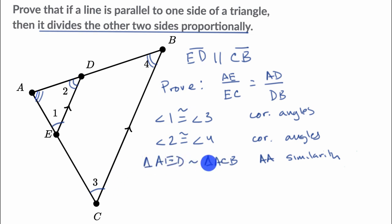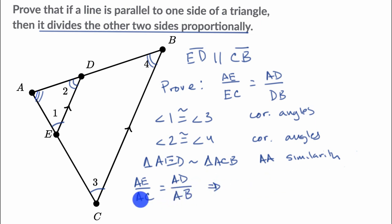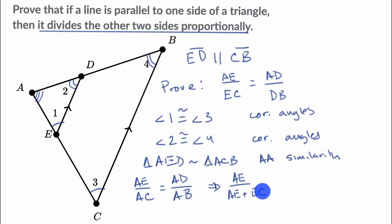Given that these two triangles are similar, we can set up a proportion. That tells us that the ratio of the length of segment AE to this entire side AC is equal to the ratio of AD to the length of the entire side AB. This is the same as the ratio of AE over AC — which is AE's length plus EC's length.